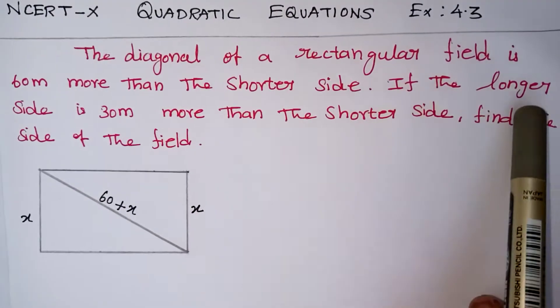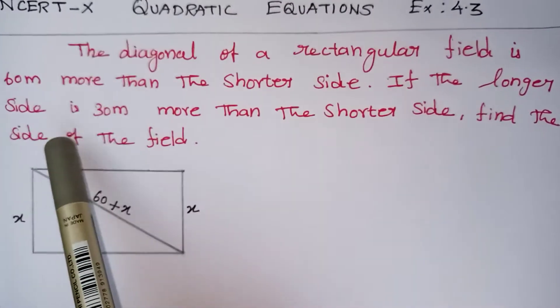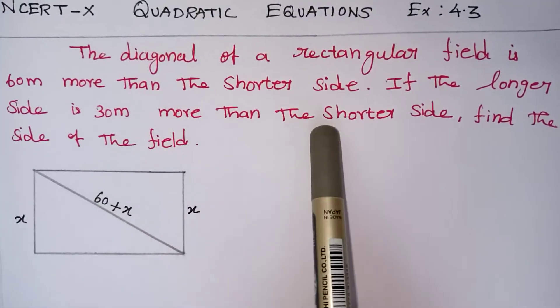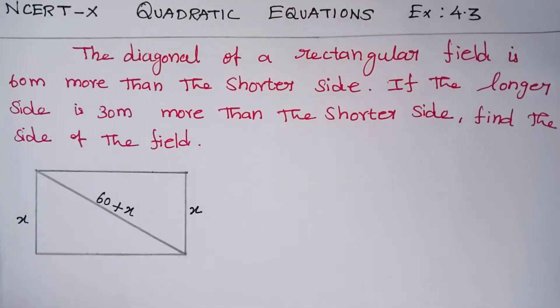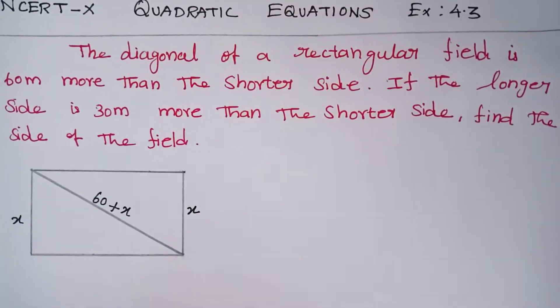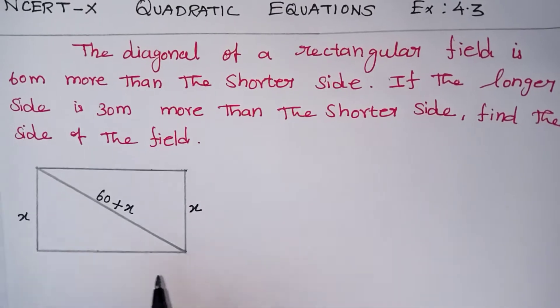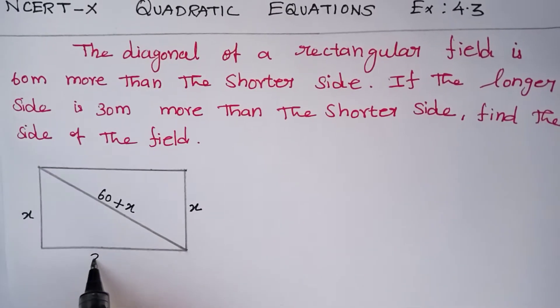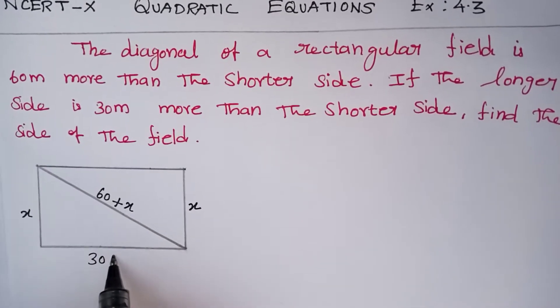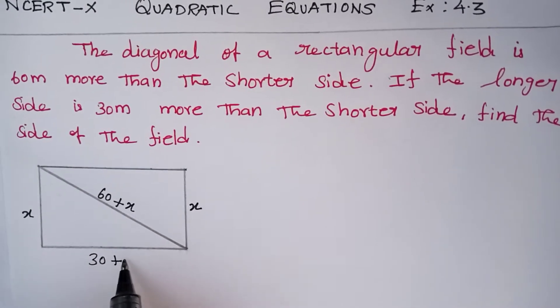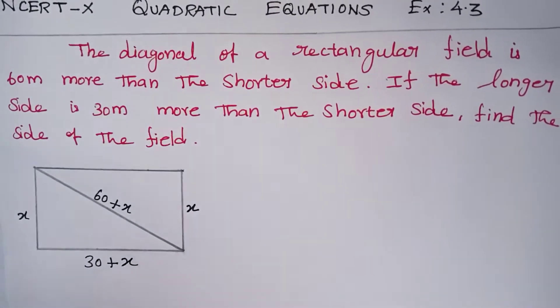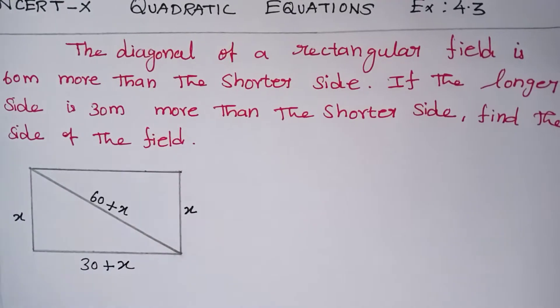If the longer side is 30 more than the shorter side, then the longer side is 30 plus x.